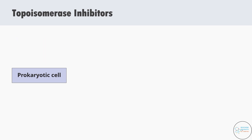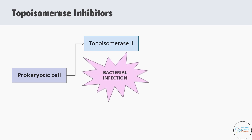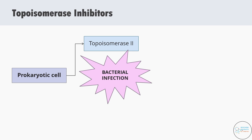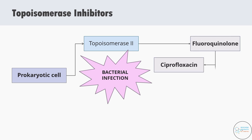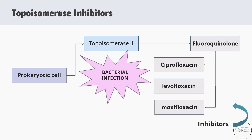Prokaryotic cells have only Type 2 topoisomerase enzymes. For example, if you are infected by bacteria that reach your lungs and keep replicating, we can target Type 2 topoisomerase to prevent bacterial replication. In bacterial infections we use the drug class called fluoroquinolones — examples include ciprofloxacin, levofloxacin, and moxifloxacin — which are topoisomerase inhibitors. This way, topoisomerase inhibitors can stop replication in both cancerous eukaryotic cells and prokaryotic bacterial cells.